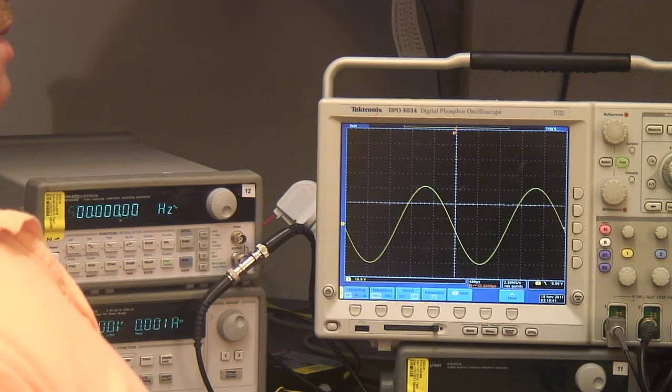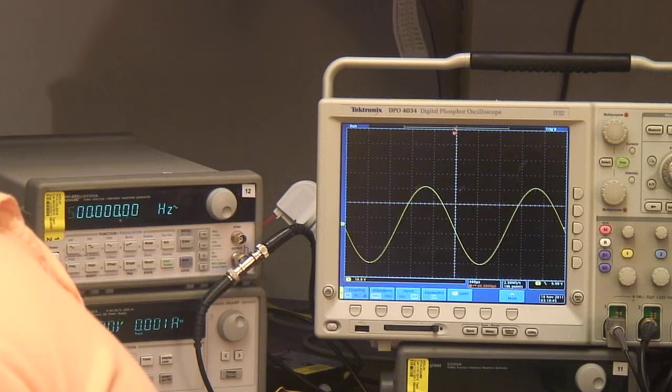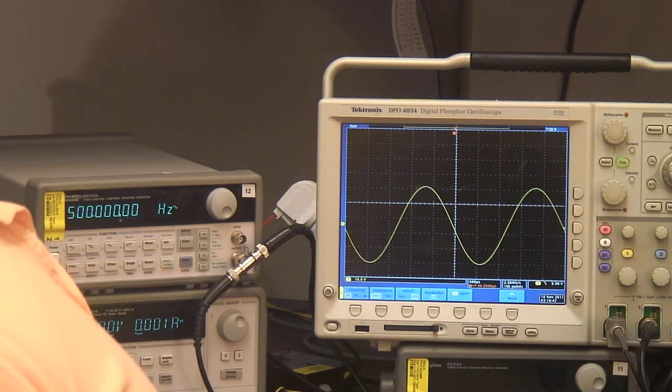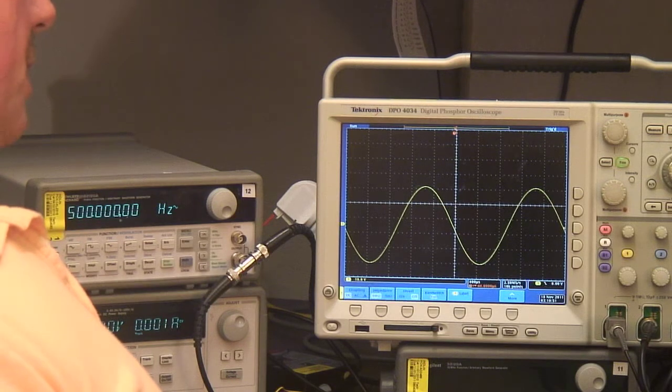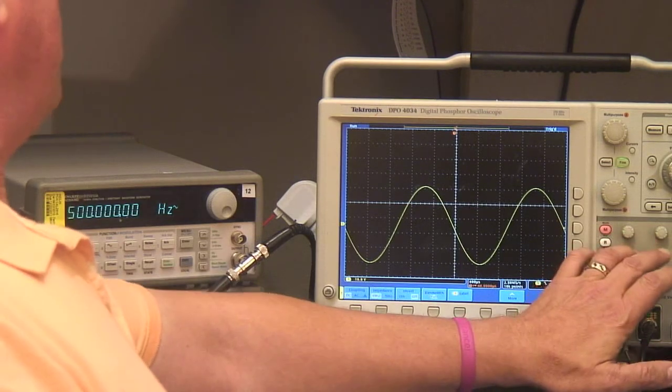And this right here is a 500 volt peak to peak sine wave or 250 volts peak. So we're going up above ground 250 and we're coming down below ground another 250 volts. That's correct. And we apply that to the input. The differential inputs, the two inputs are tied together and we put the scope probe on the output of the diff amp. Let's see how the output looks like.